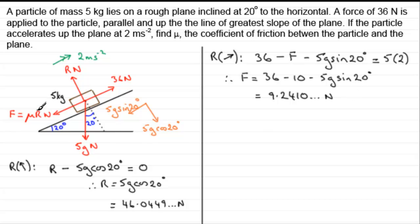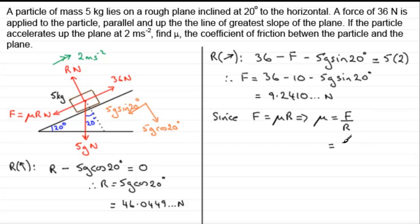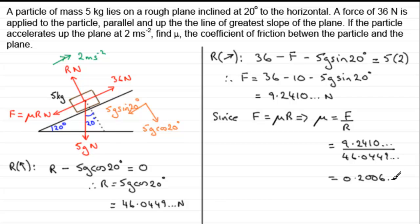Since the particle is sliding along the rough surface, friction is limiting, so F equals mu R. Rearranging for mu: divide both sides by R, so mu equals F divided by R. Substituting in F equals 9.2410 and R equals 46.0449, dividing gives 0.2006. Rounding to two decimal places, mu equals 0.20.